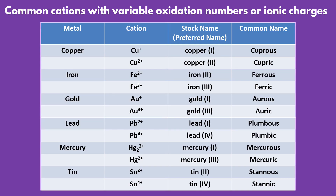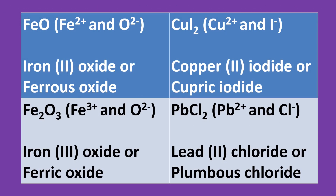Here is a list of common cations with variable oxidation numbers or ionic charges. The key to naming ionic compounds with transition metals is to determine the ionic charge on the metal and use Roman numerals to indicate the charge on the transition metal. A nomenclature for distinguishing between different ions of a metal is to use the suffixes '-ous' and '-ic'. The suffix '-ic' indicates the ion of higher ionic charge while '-ous' indicates the ion of lower ionic charge. These are some examples of ionic compounds with metals that have variable oxidation numbers or ionic charges.